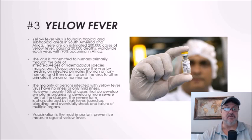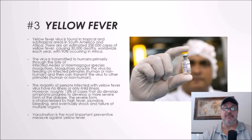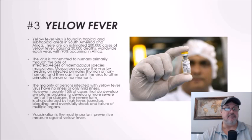Other mosquito species can also transmit yellow fever. Mosquitoes acquire the virus by feeding on infected primates — human or non-human — and then transmit it to another primate. The majority of persons infected have no illness or only mild illness. However, roughly 15% of cases that do develop symptoms progress to a more severe form, characterized by high fever, jaundice, bleeding, and eventually shock and failure of multiple organs. Vaccination is the most important preventive measure against yellow fever.